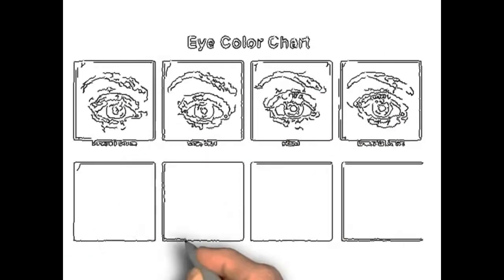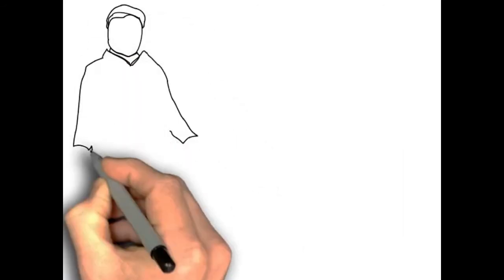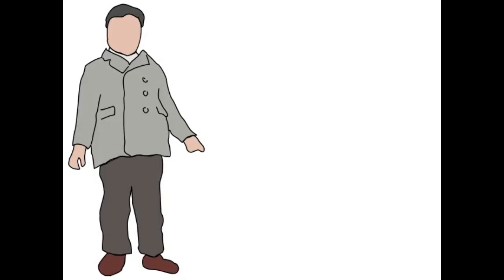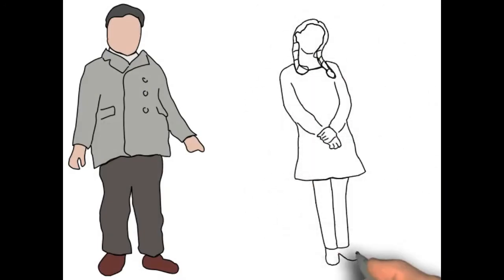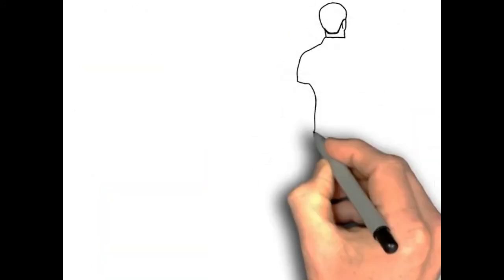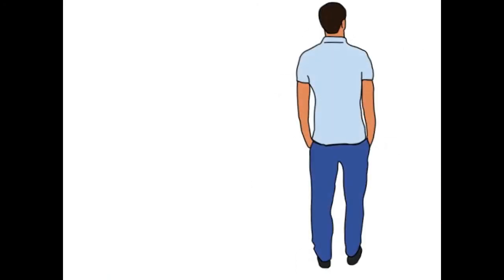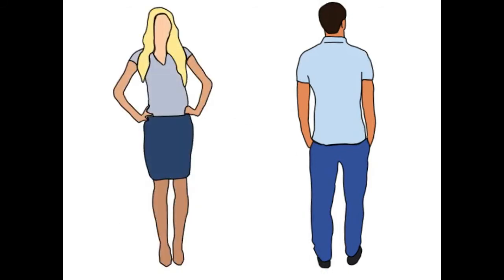The sex chromosomes in humans are different in males and females. Females have a pair of X chromosomes and males have XY chromosomes. The sex chromosomes of females are thus known as homomorphic while the males are called as heteromorphic. Depending upon the sex chromosomes involved, the inheritance is called X-linked inheritance or Y-linked inheritance.